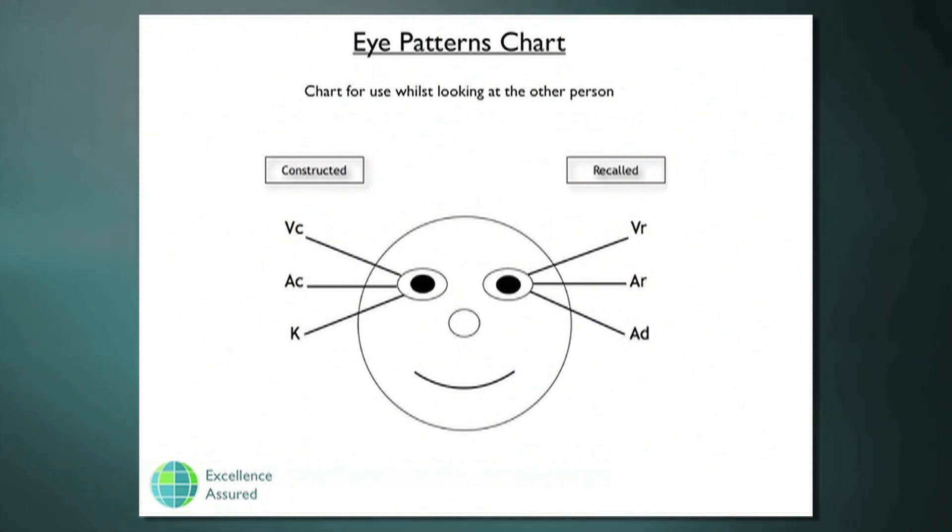If you're talking to someone and they move their eyes horizontally, you can say to them, does that sound right? If they move their eyes down and to the left as you look at them, then you can say, do you get a feel for what I'm saying?